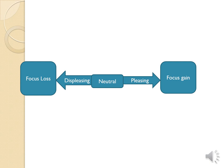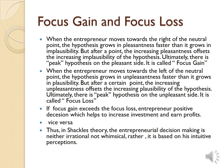At the neutral point, the right side is pleasing and the left side is displeasing, and at the extremes there is a focus gain and a focus loss. When the entrepreneur moves towards the right of the neutral point, the hypothesis grows in pleasantness faster than it grows in implausibility. But after a point, the increasing pleasantness outweighs the increasing implausibility. Ultimately, there is a peak hypothesis on the pleasant side. It is called focus gain.